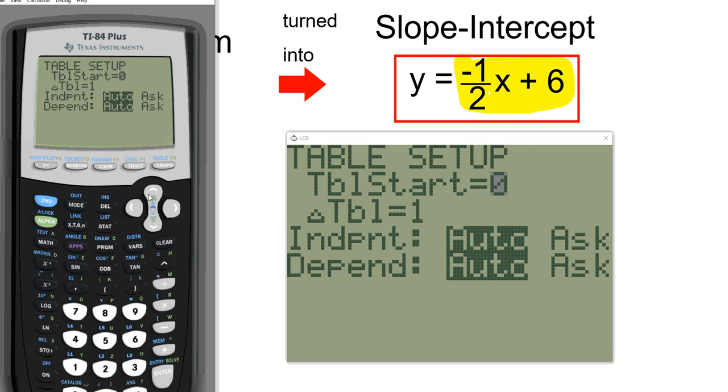Bring your cursor to highlight this ask under independent. Just bring it down to ask, and this will help you out there. So just scroll down to where it starts hitting auto and then to the right, and then to select it, choose enter.